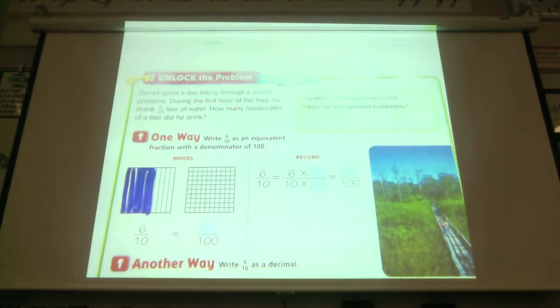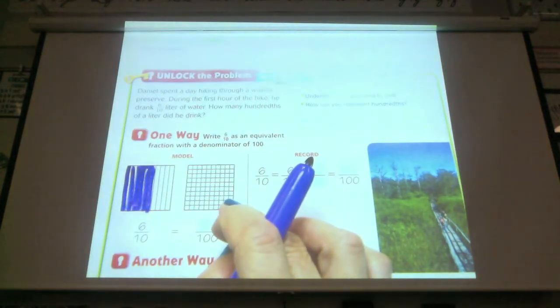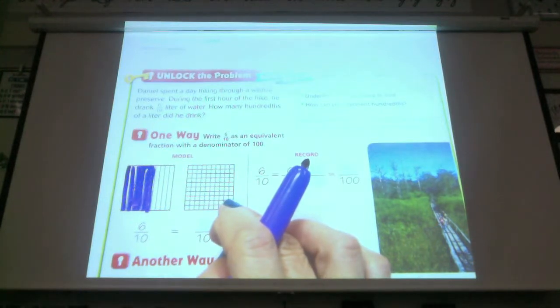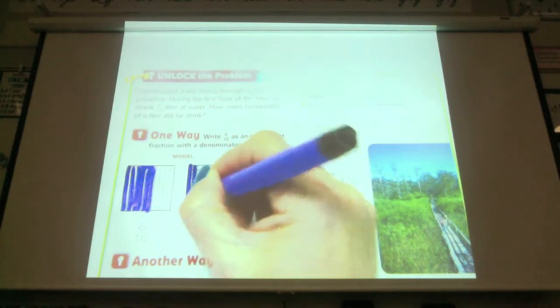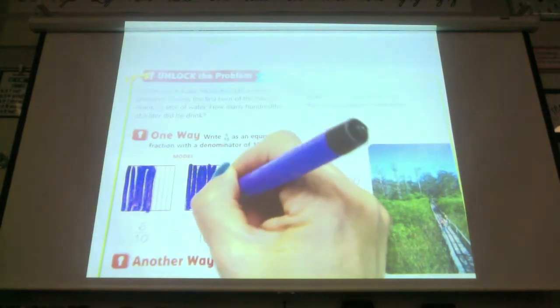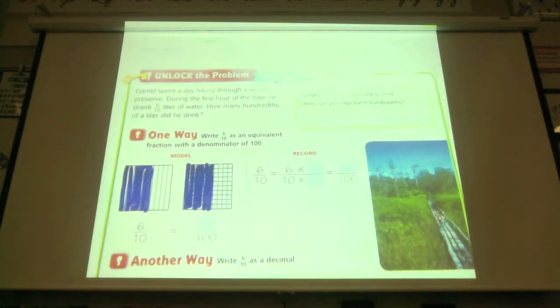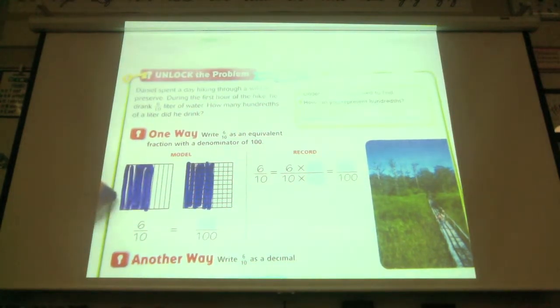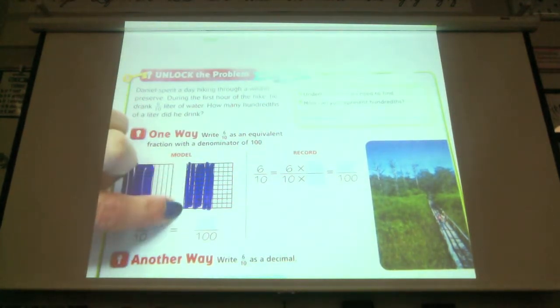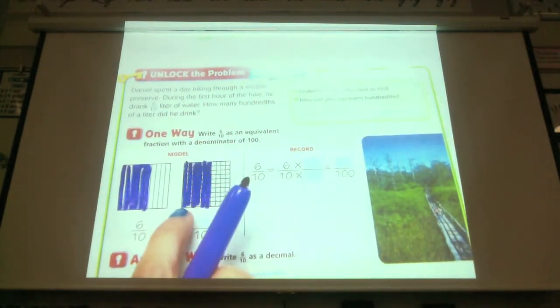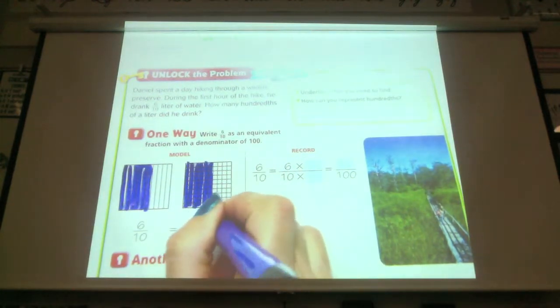The teacher references lesson 9-2 and shows a hundredths grid. "If I have a hundred right here, what would six-tenths look like? Six columns down, right?" The teacher shades six columns: "One, two, three, four, five, six." Each column has ten squares. Counting by tens: "ten, twenty, thirty, forty, fifty, sixty. So it's really sixty hundredths."